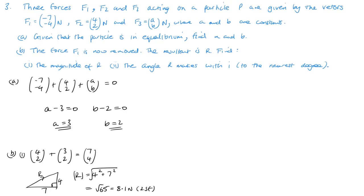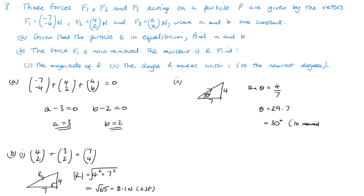For the angle R makes with i: R is 7 across and 4 up, so tan theta equals 4 over 7. Taking the inverse tan gives 29.7 degrees, which rounds to 30 degrees to the nearest degree — above the horizontal.